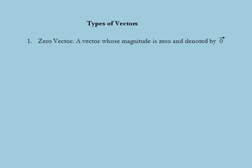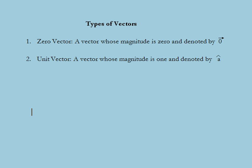Starting with the zero vector: a vector whose magnitude is zero is known as the zero or null vector, denoted by the symbol with an arrow above zero. Another type is the unit vector: a vector whose magnitude is unity. If vector A has magnitude or modulus A, then the corresponding unit vector is in the direction of vector A, denoted by A-cap.